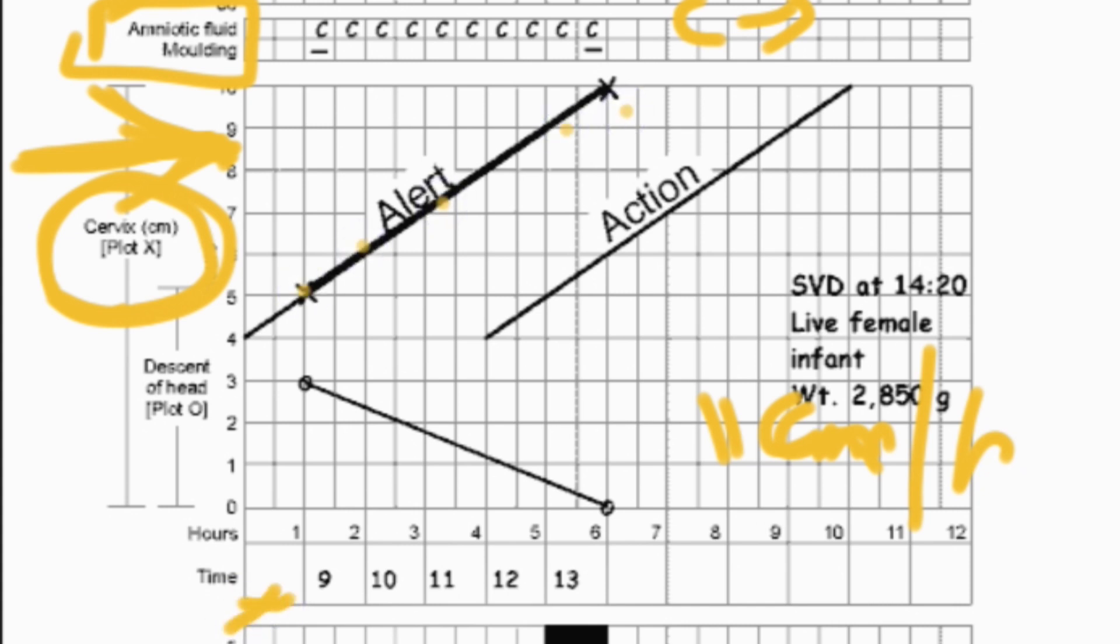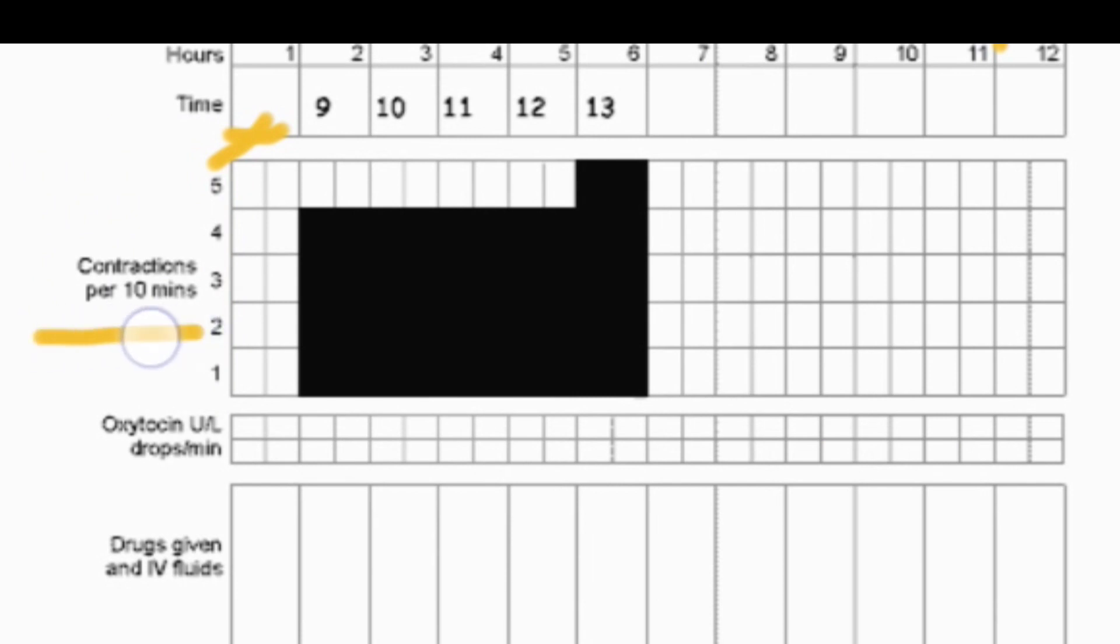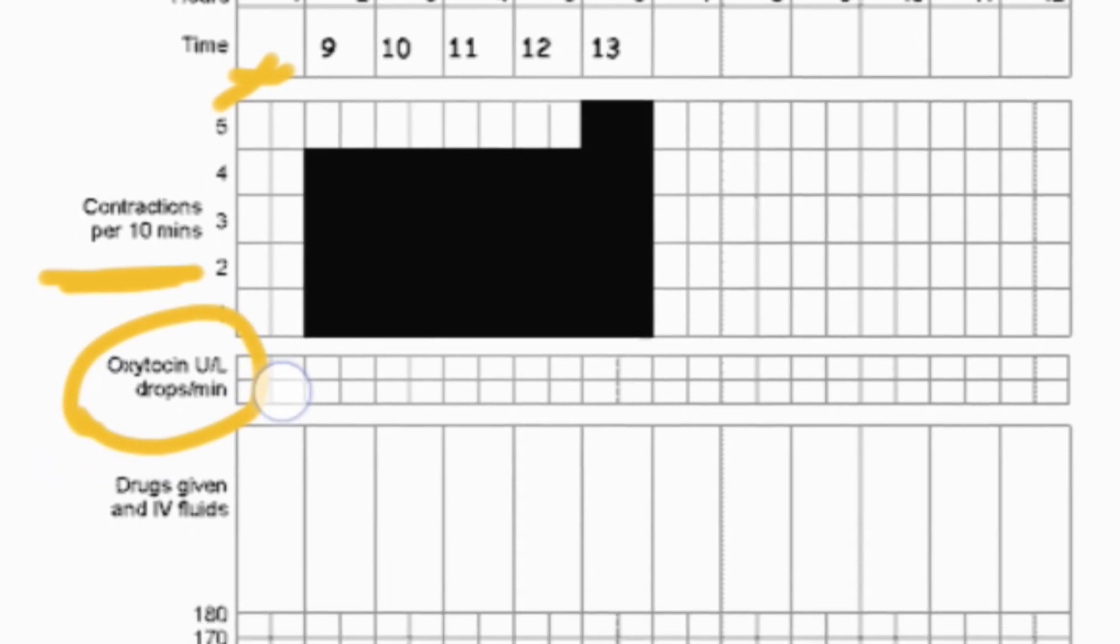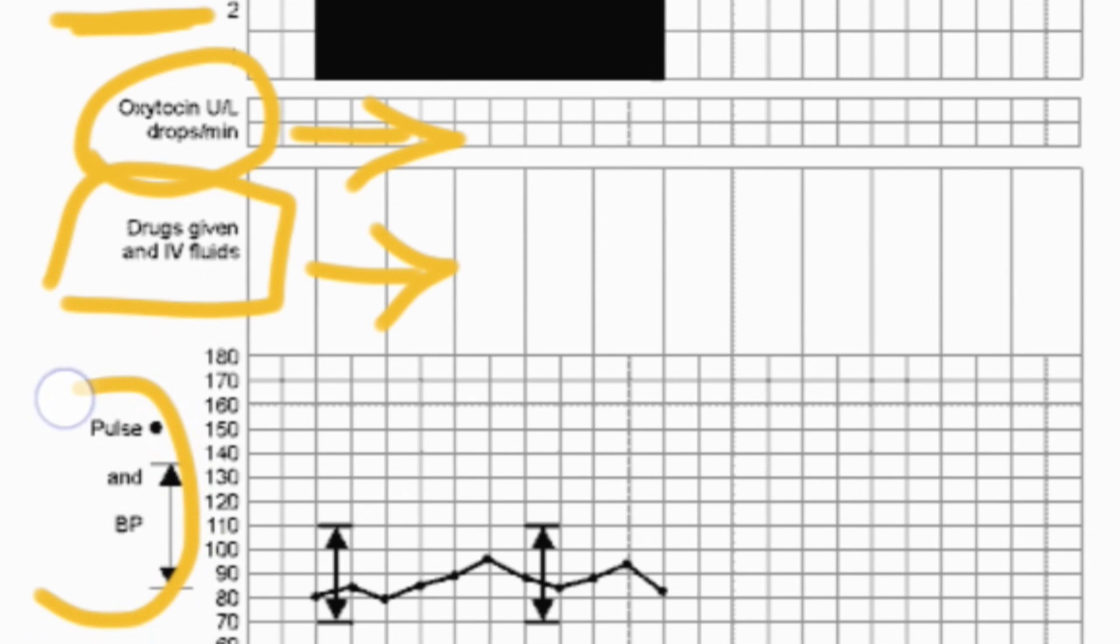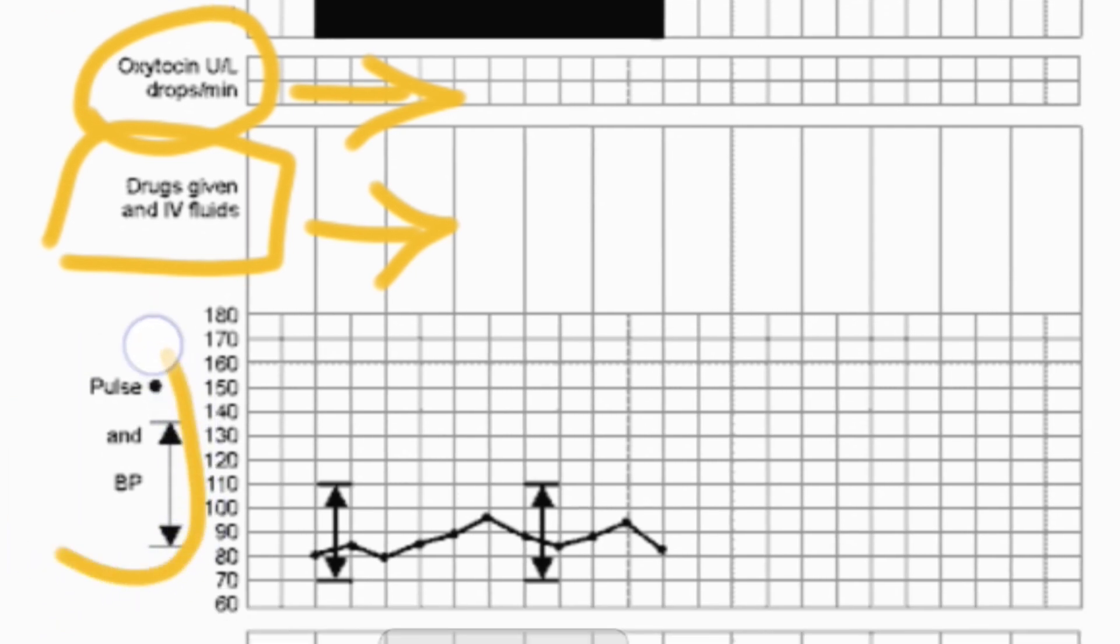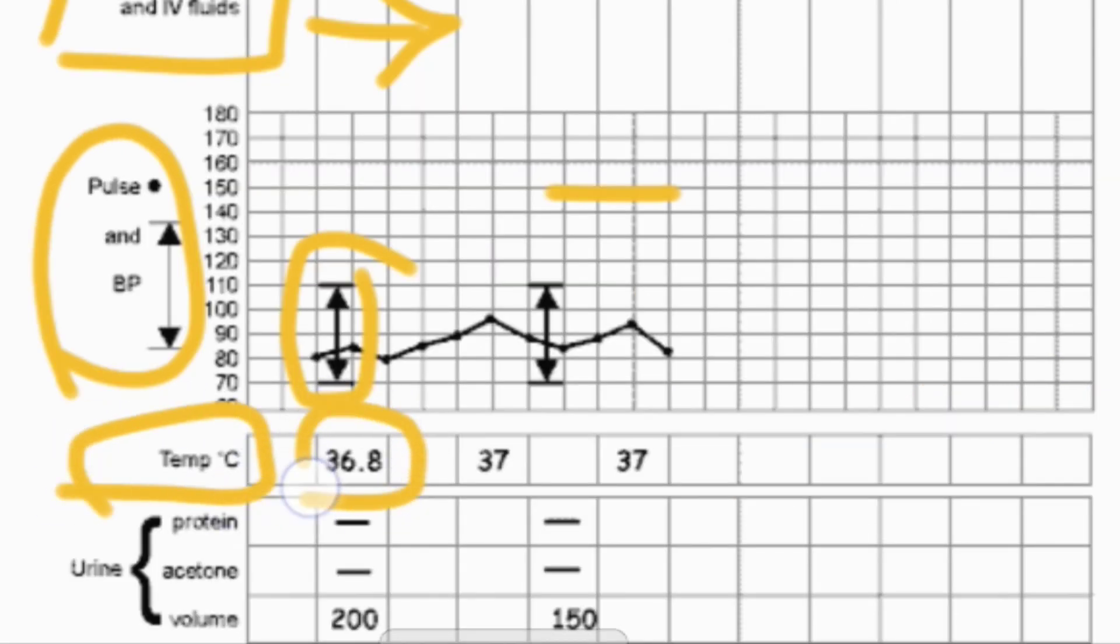Next there is contraction, and this contraction is checked per 10 minutes. Generally, per 10 minutes, 20 minutes they will be checking the contraction. If the contraction is not enough, we will provide oxytocin as recommended by the doctor. And there are other drugs also provided during the labor, and that will be noted here. And next, pulse and BP will be marked here. You can see this marking is BP and this marking is pulse. And the temperature, per 2 hours the temperature will be checked. And next, urine volume will be observed regularly.